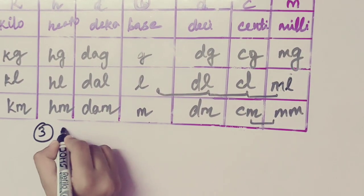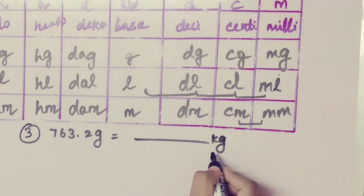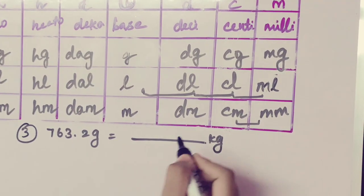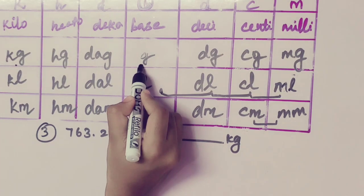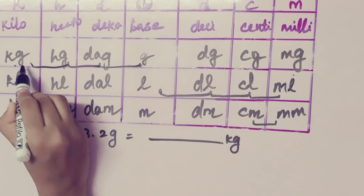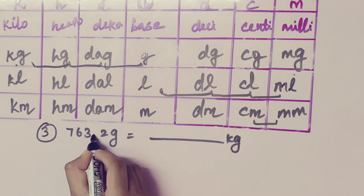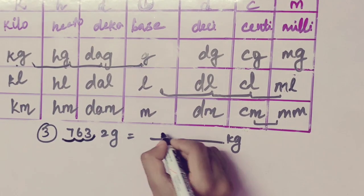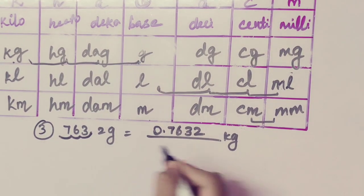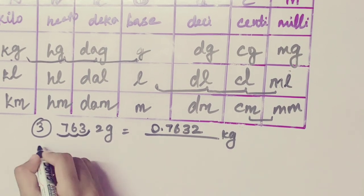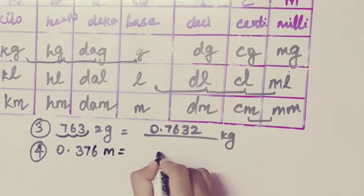Next, third sum: 763.2 gram equal to dash kilogram. Gram to kilogram — three steps to the left side: one, two, three. So the answer is 0.7632 kg. 763.2 grams is equal to 0.7632 kg.